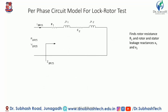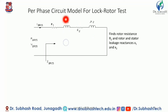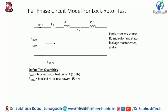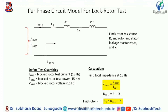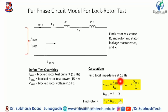Using the per-phase circuit model for the Lock Rotor Test, we find the rotor resistance R2 and rotor and stator leakage reactances jX1 and jX2. Define the test quantities: V_BR15 is the block rotor test voltage at 15 Hz, I_BR15 is the block rotor test current at 15 Hz, and P_BR15 is the block rotor test power. The total impedance is: Z_BR15 = V_BR15 / I_BR15.